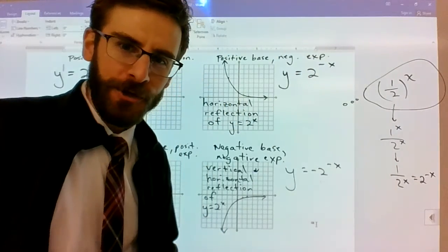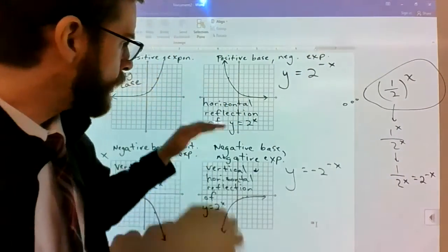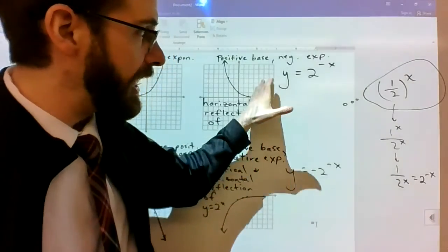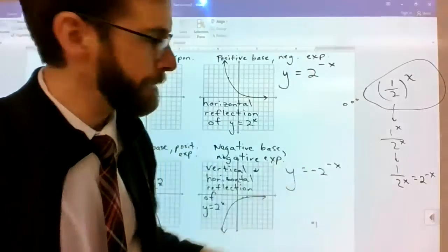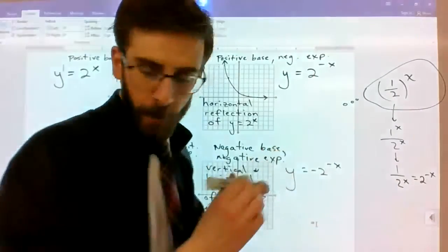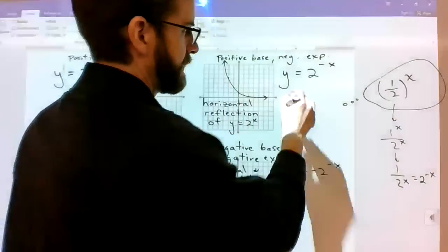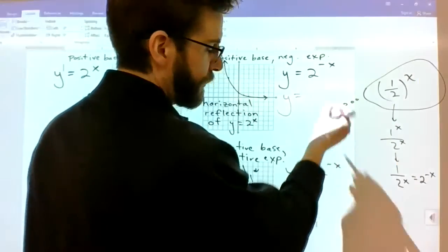It turns out two to the negative x does the exact same thing as one over two to the x because negative exponents pretty much move to positive when you put them in the bottom part of the fraction. This equals two to the negative x.